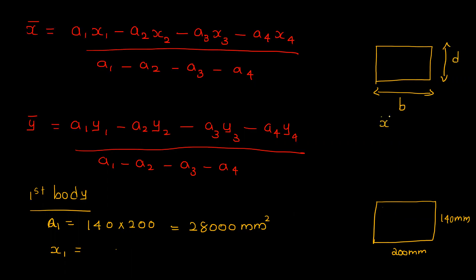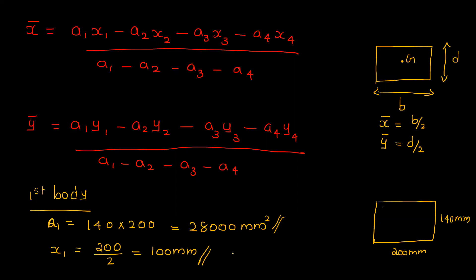For the centroid of the rectangle, x-bar equals b divided by 2, and y-bar equals d divided by 2. So x1 equals 200 divided by 2, which equals 100 mm. And y1 equals 140 divided by 2, which equals 70 mm.